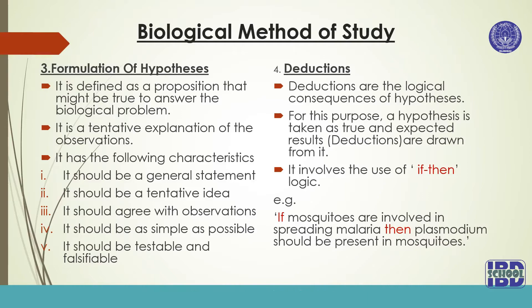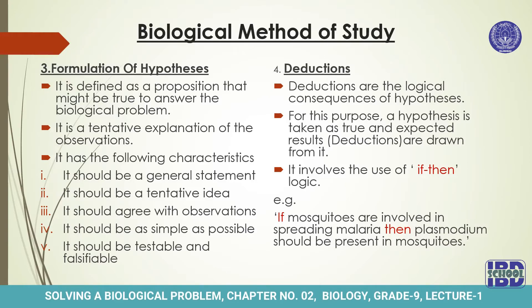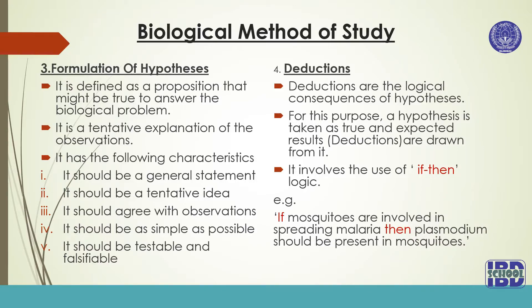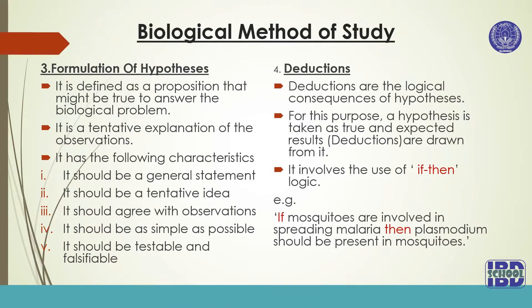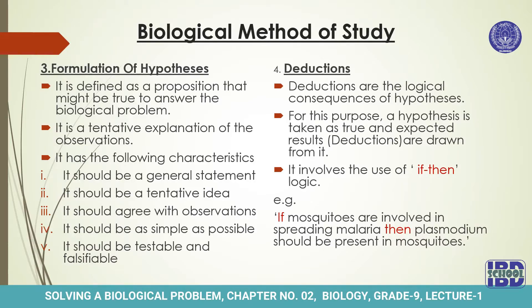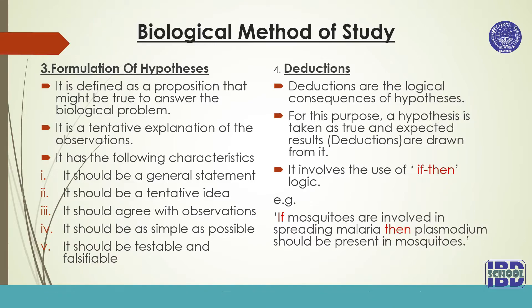The fourth step is deductions. Deductions are the logical consequences of a hypothesis. For this purpose, a hypothesis is taken as true and expected results — which are the deductions — are drawn from it. It involves the use of if-then logic. For example, if mosquitoes are involved in spreading malaria, then plasmodium should be present in mosquitoes. As you can see, while making a deduction on the basis of a hypothesis, if-then logic is used.